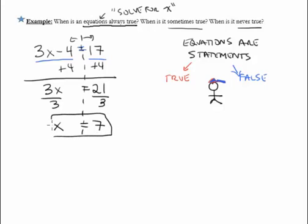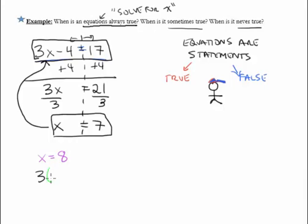Now x equals 7 is the particular value, the only value, that makes this equation true. If, for example, x equals 8, we could substitute that in and say, well, does that make the equation true? Well, it's not going to.